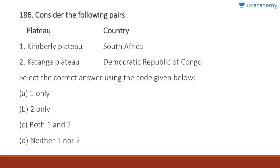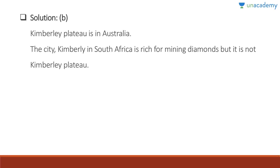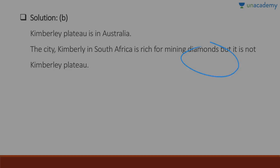Question 186: Kimberley Plateau is in South Africa — wrong, it is in Australia. Katanga Plateau is in the Democratic Republic of Congo — correct. Answer is B, two only. Kimberley is a city in South Africa famous for diamond mining, but the Kimberley Plateau is in Australia. Katanga Plateau is in the DRC.